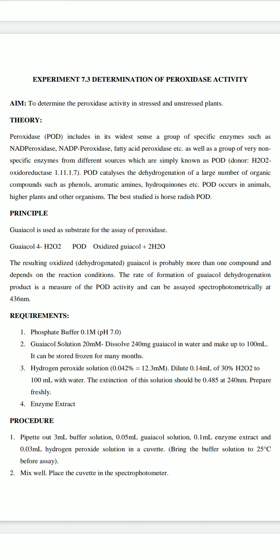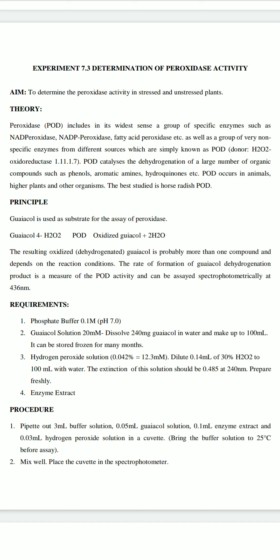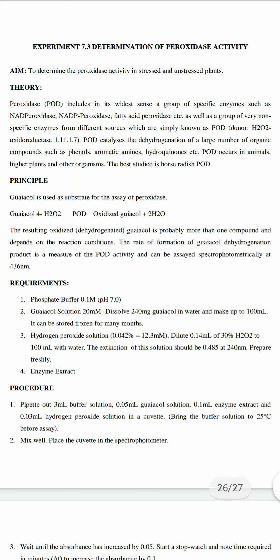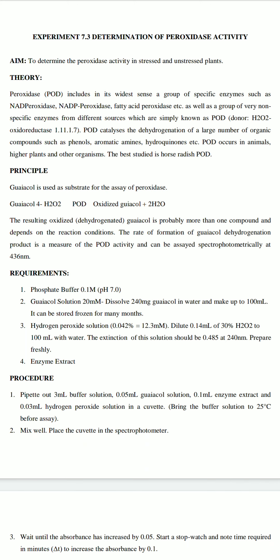The principle: we follow the guaiacol method. Guaiacol reacts with H2O2, and peroxidase catalyzes this reaction to give oxidized guaiacol and two molecules of water. Specifically, four molecules of guaiacol react with four molecules of H2O2 in the presence of peroxidase to give oxidized guaiacol and water. This oxidized guaiacol is measured at 436 nm in the colorimeter to determine how much peroxidase was present in the sample.